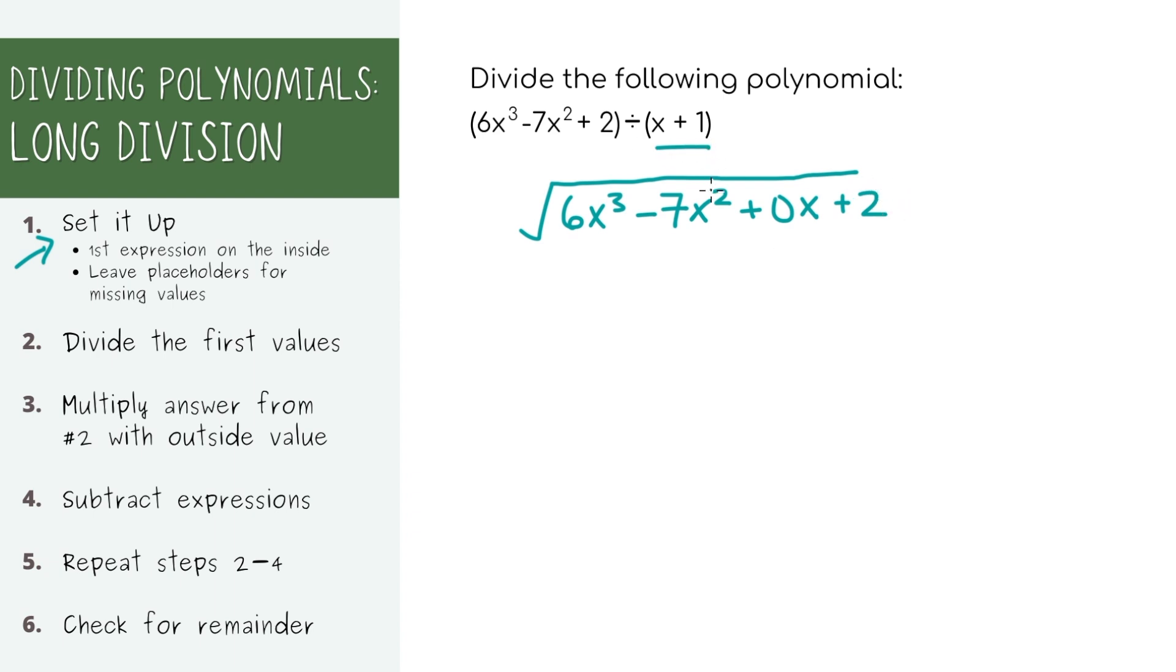Now let's write the second expression on the outside. Once we have it set up, let's just look at the first term of each expression, which is x and 6x cubed. We're basically going to divide these two terms in our head. So 6x cubed divided by x, or you can also think of it like x times what term equals 6x cubed? Well, x times 6x squared equals x cubed. So let's write that down. It's best to make sure that all of your exponents line up. So I'm going to put it here over this other x squared term.